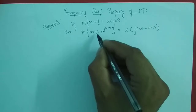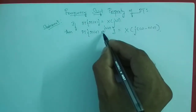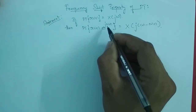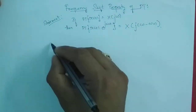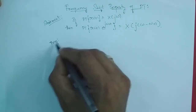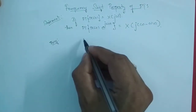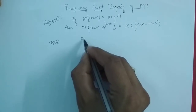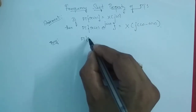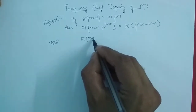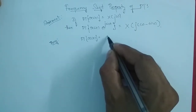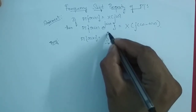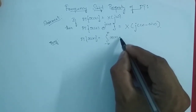So if there is a shift in the frequency domain, in the time domain e^(jω₀t) gets multiplied. Now for the proof, from the definition of Fourier transform, the Fourier transform of x(t) is equal to integrating from minus infinity to infinity.